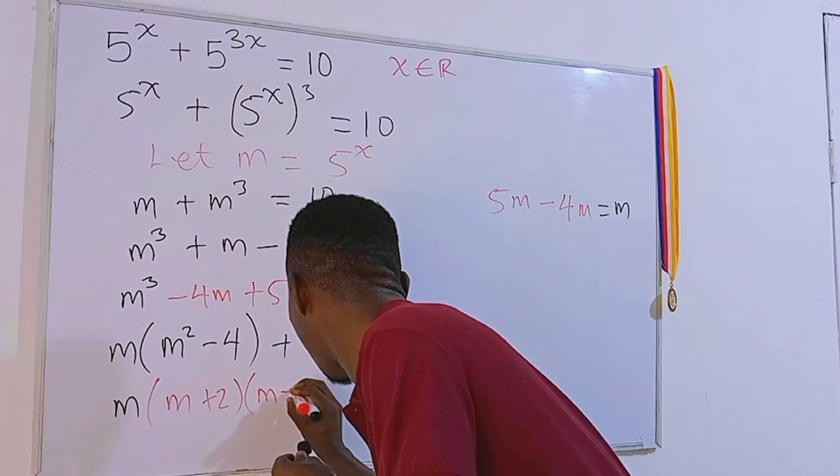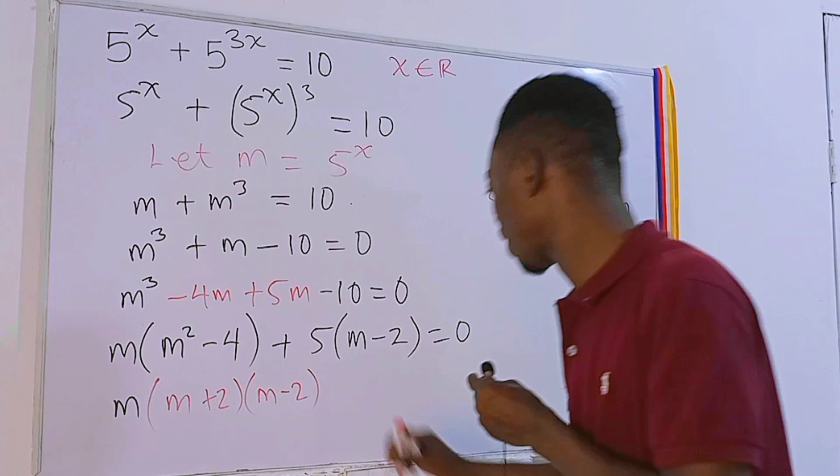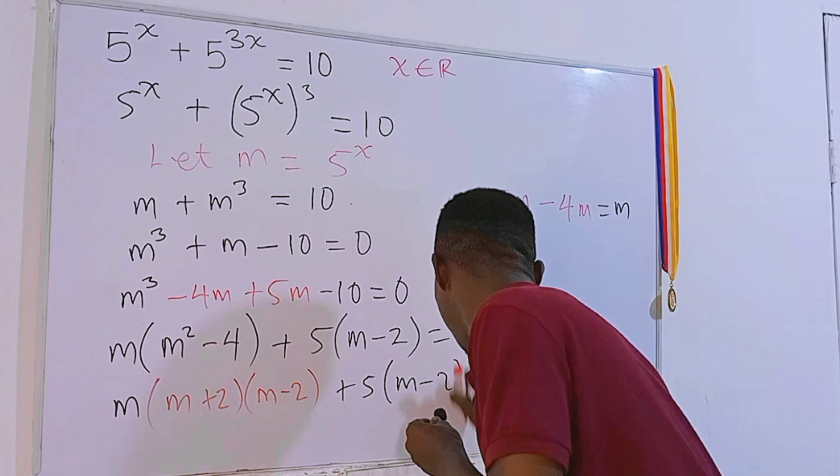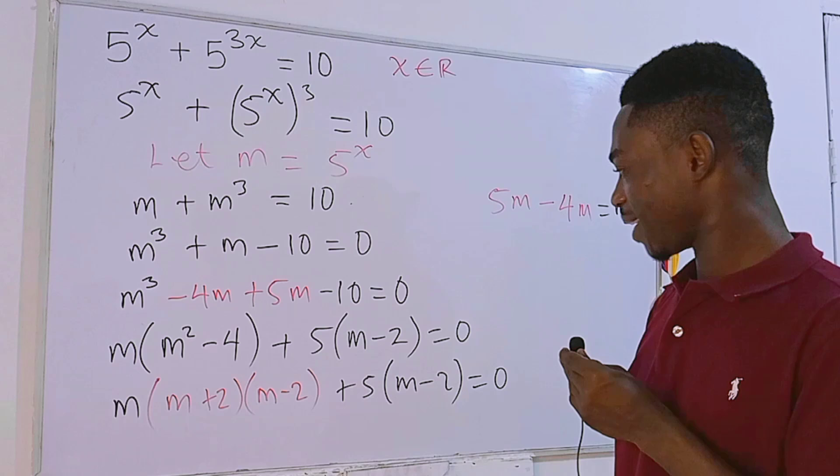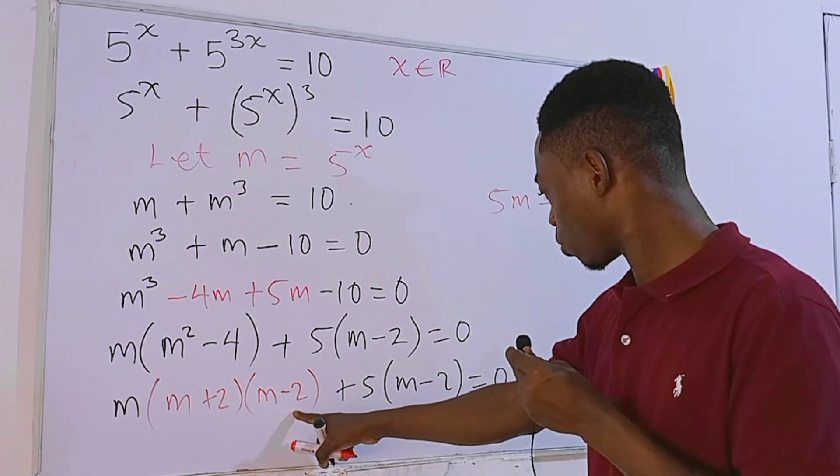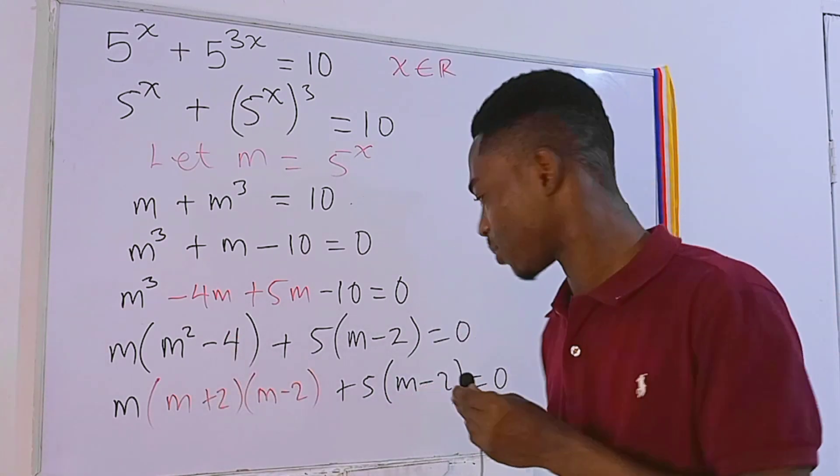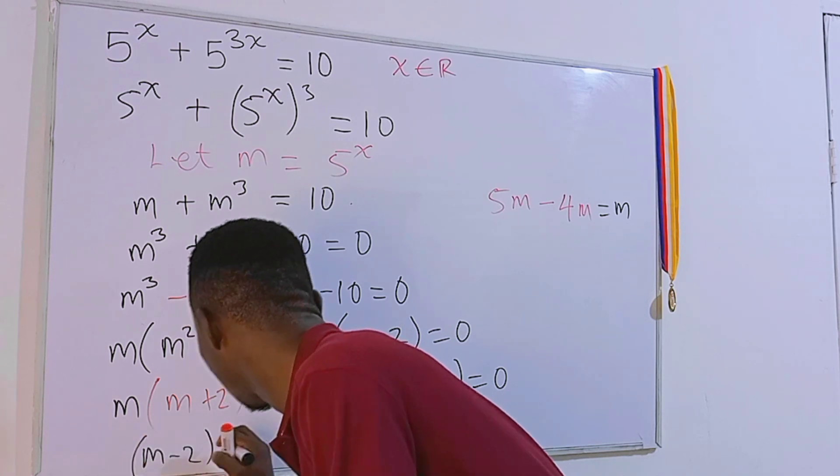And the rule of this is going for what's inside the parenthesis, then plus 5 times (m - 2), and this equals 0. Pretty interesting. Now check this: we have m - 2 and m - 2, they are common, so we can just take them out.